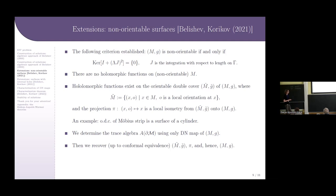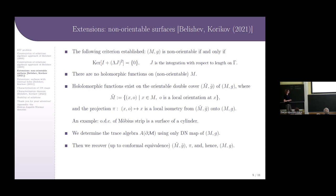An example: an orientable double cover of a Möbius strip is a cylinder. So we have the double cover, and we determine the trace algebra of the cover using only the DN map of the original surface. Then we construct a copy of the cover, and therefore a conformal copy of the original surface M.